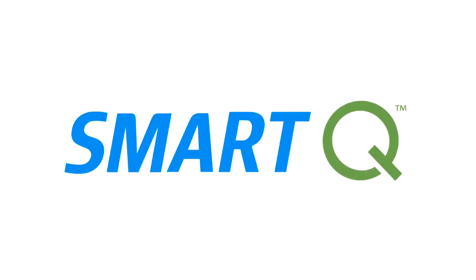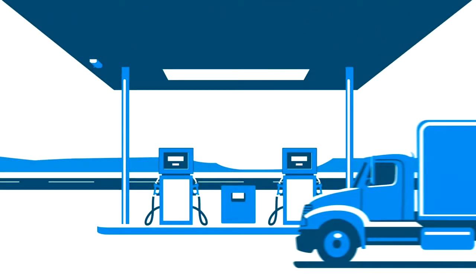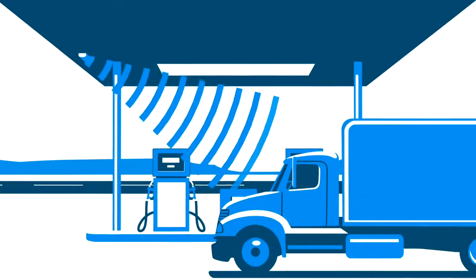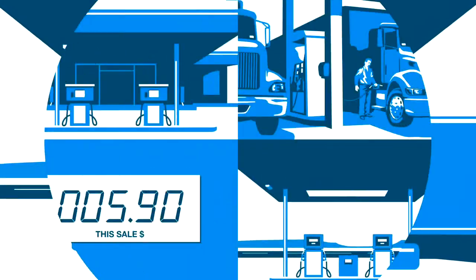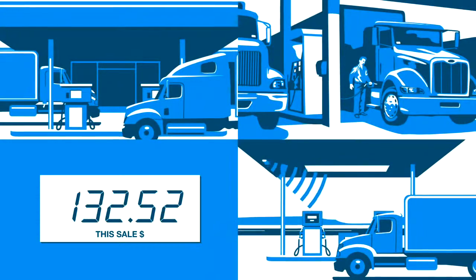Now you can with SmartQ from Comdata. SmartQ uses Radio Frequency Identification, or RFID, to automatically begin the pre-authorization process as drivers pull into the fuel lane. Because it speeds fuel transactions and includes advanced cost management tools,